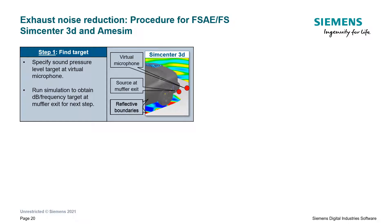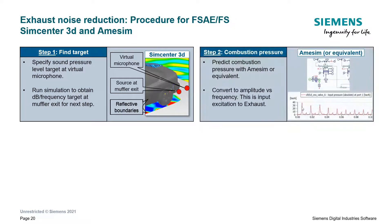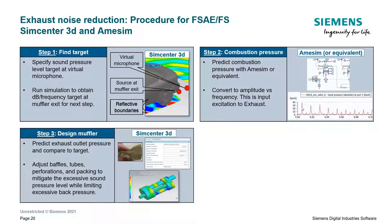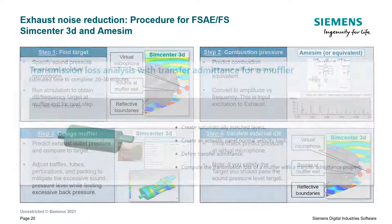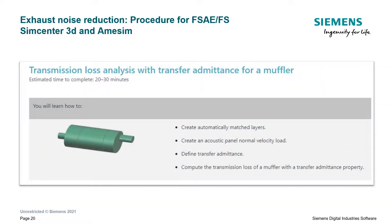A typical procedure would be to first find the pressure level target, then predict the combustion pressure from a 1D software such as AimSim, then design the muffler baffles, tubes, perforations, and packing to mitigate excessive sound pressure level while limiting excessive back pressure, and finally validate the external decibel level. Keep in mind there is e-learning content showing you how to approach acoustic simulations.